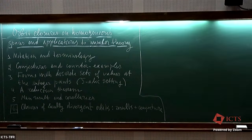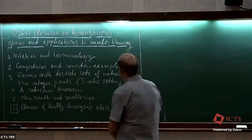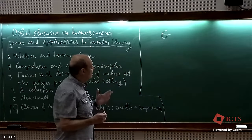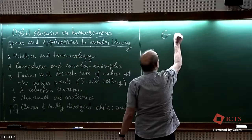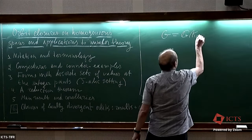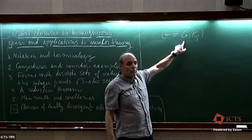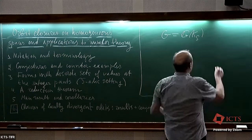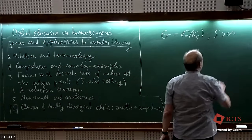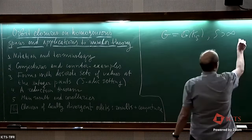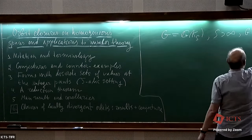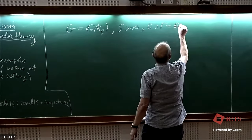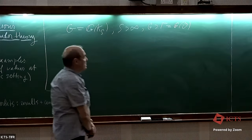Let me start with some basic notation. We denote by G the group G(K_S), where G is an algebraic group defined over a number field K. As usual, S is a finite set of valuations of the number field K, containing the Archimedean ones. By Γ we denote an arithmetic subgroup — the main case is Γ = G(O), where O is the ring of integers.